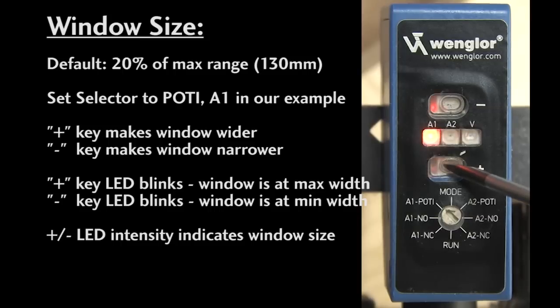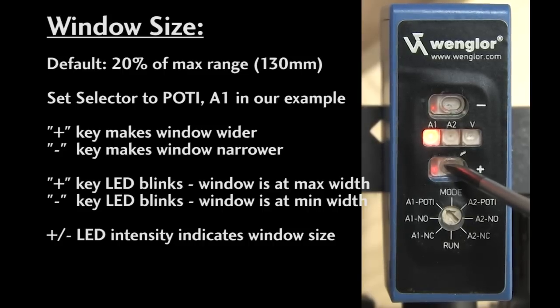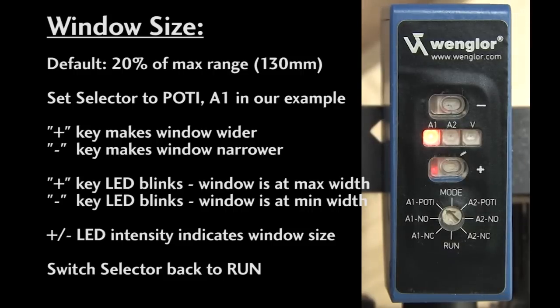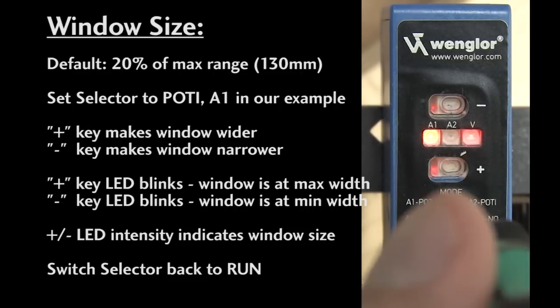It's a little hard to see in this video, but the intensity of the LEDs changes as you get closer to the limit. The closer you get to the widest window, the brighter the plus LED gets. The closer you get to the minimum window, the brighter the minus LED gets. I've found there's a little over 50 button presses between the max and the min. You can also hold the button down and let it gradually change. Once you get the window you want, switch the selector back to run.